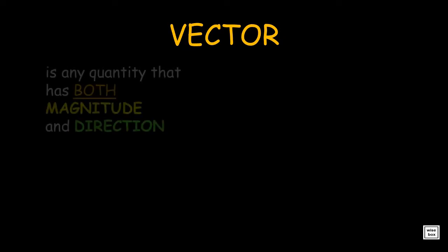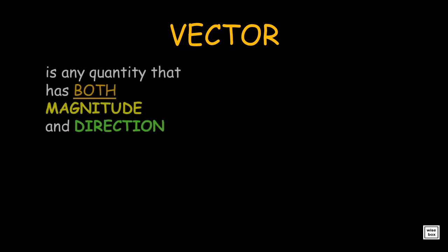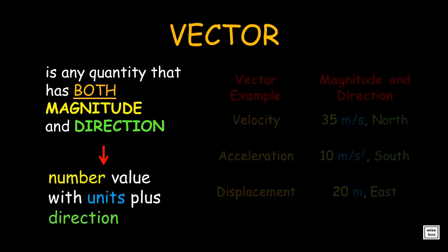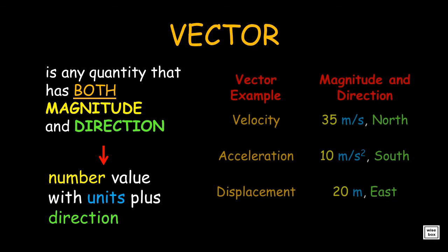A vector is any quantity that has both magnitude and direction. This means it has a number value with units, plus direction. Some examples are velocity, acceleration, and displacement.